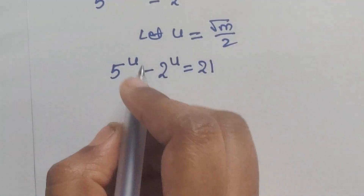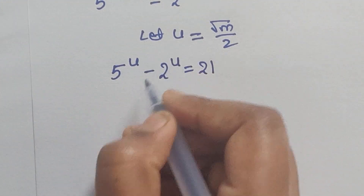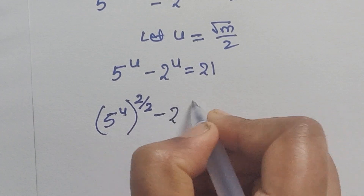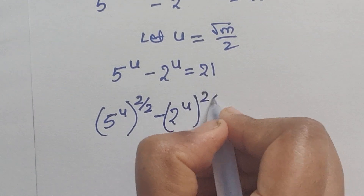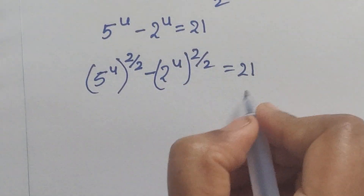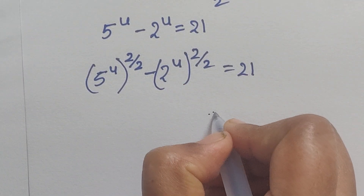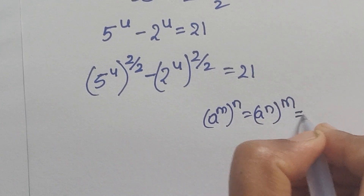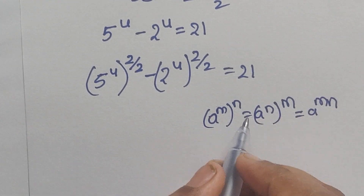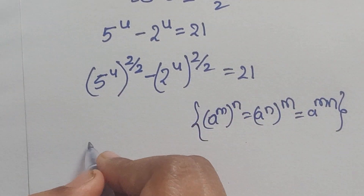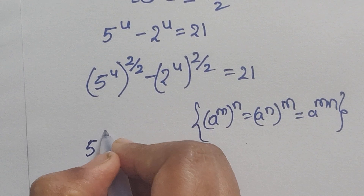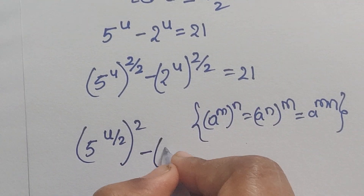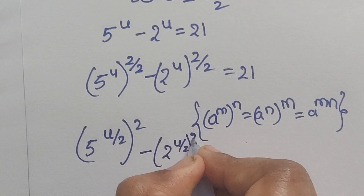Now assume 5 to the power of u as 5 to the power of u/2, whole squared, minus 2 to the power of u, equals 21. We can use the formula: a to the power of m, whole to the power of n, equals a to the power of m times n. Using this formula, we can write 5 to the power of u/2, squared, minus 2 to the power of u/2, squared, equals 21.